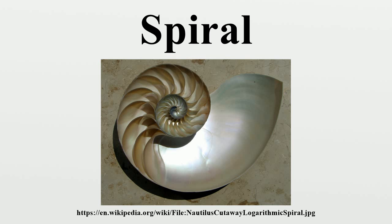In some shells such as nautilus and ammonites, the generating curve revolves in a plane perpendicular to the axis and the shell will form a planar, discoid shape. In others it follows a skew path forming a helicospiral pattern. Thompson also studied spirals occurring in horns, teeth, claws and plants.